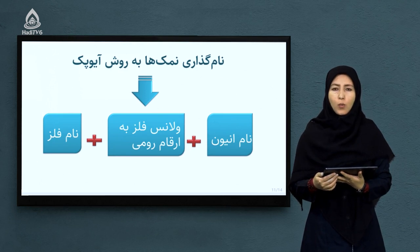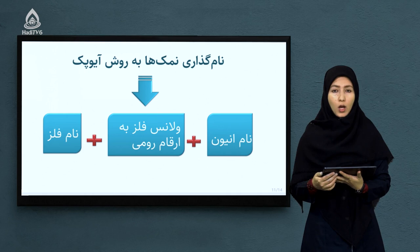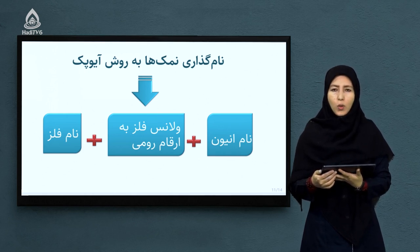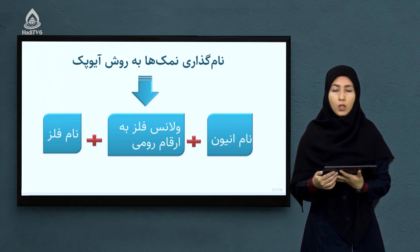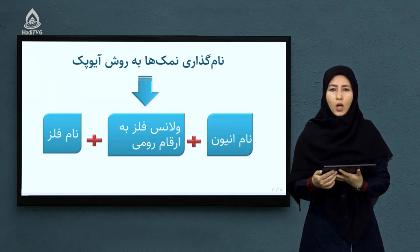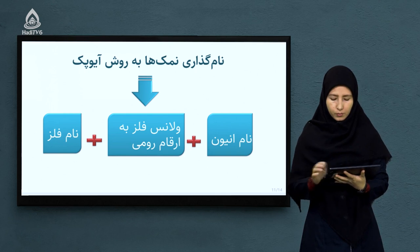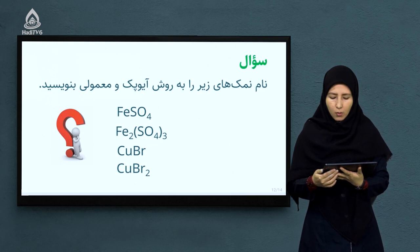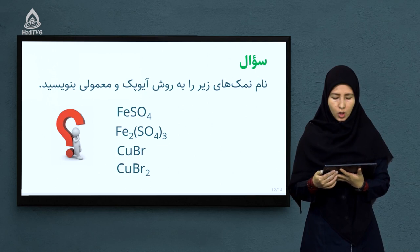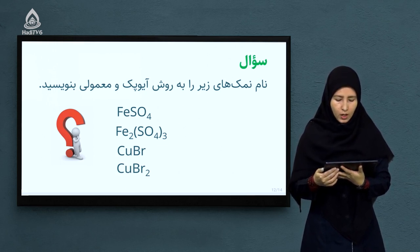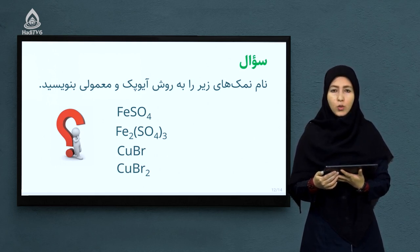نامگذاری نمک ها به روش IUPAC: اول نام فلز را می نویسیم، بعد ولانس فلز مورد نظر را به ارقام رومی می نویسیم، و در آخر نام انیون مورد نظر را می نویسیم. سوال: نام نمک های زیر را به روش IUPAC و معمولی بنویسید. فرمول های داده شده: FeSO₄، Fe₂(SO₄)₃، CuBr، CuBr₂.